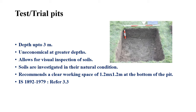Once you take a test pit, you will be able to get a vertical profile of soil beneath the ground, at least up to a depth of three meters. You can also collect undisturbed samples by inserting a tube sampler. Samplers are used for obtaining soil samples from beneath the ground, and using those samplers we can obtain undisturbed samples from trial pits. Undisturbed samples are very important for the determination of engineering properties and are more preferred.